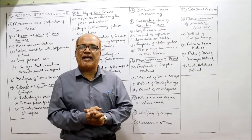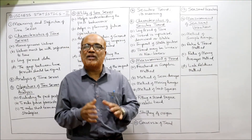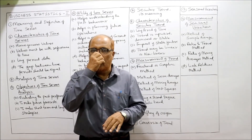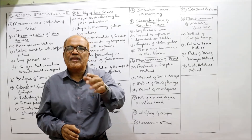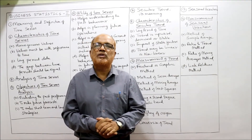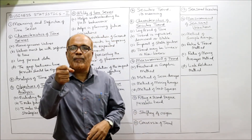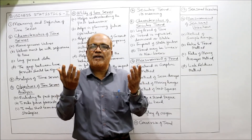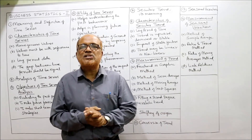For example, the demand for soft drinks increases during the summer season and comes down once summer ends. This pattern repeats every year. Similarly, the demand for cotton clothes increases in summer, woolen clothes in winter, and umbrellas and raincoats during the monsoon season. During the season, sales increase; after the season, sales come down — and this pattern is repeated every year. These are called seasonal variations.